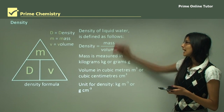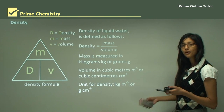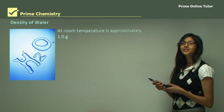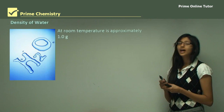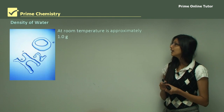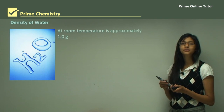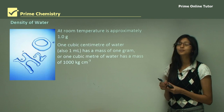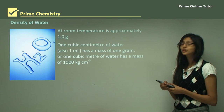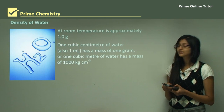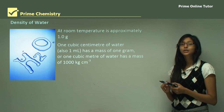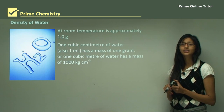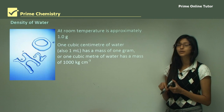Density is the mass of a substance divided by the volume it occupies. Now let's look at the density of water. At room temperature, water is approximately 1 gram per cubic centimeter. That means one cubic centimeter of water — also one milliliter — has a mass of one gram, or one cubic meter of water has a mass of one thousand kilograms.